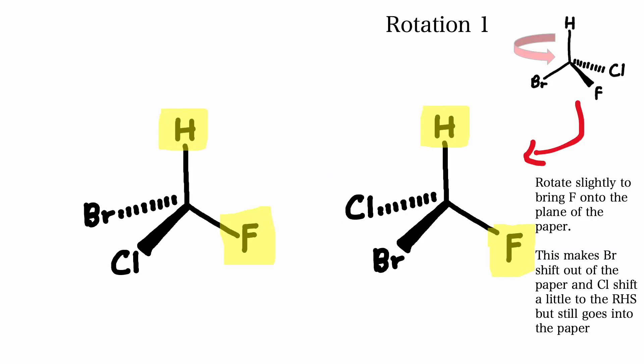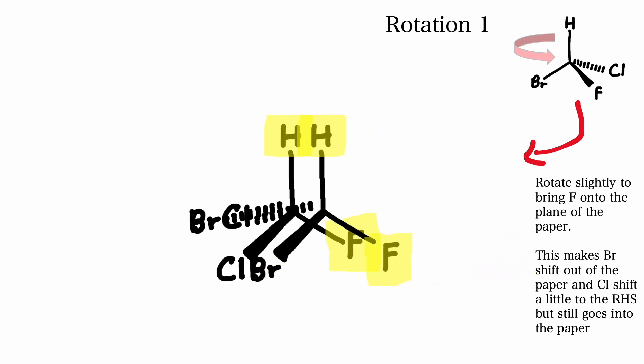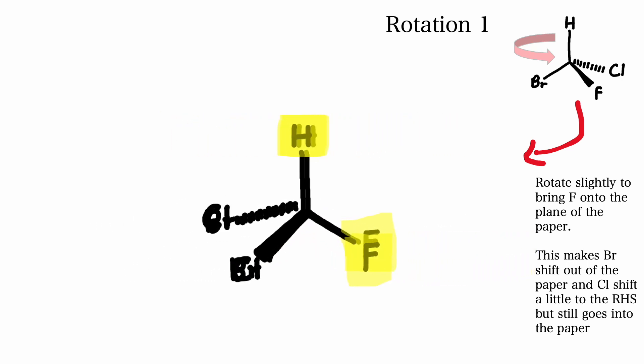If we rotate it again slightly anti-clockwise to try and get it to superimpose on the original mirror image, we see that chlorine is now on the plane of the page, bromine is coming out of the page, and chlorine has shifted a little to the right hand side but is still going into the page. Now when we superimpose these, you can see that bromine and chlorine are not able to superimpose on each other.